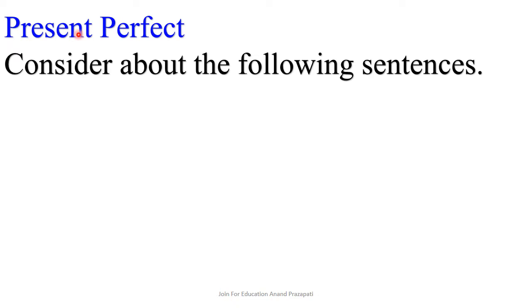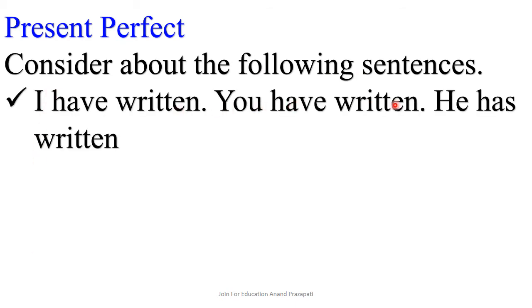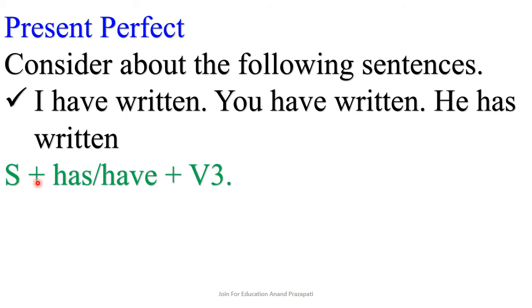Present perfect is the third kind of present tense. Consider the following sentences: 'I have written, you have written, he has written.' The structure of the present perfect is Subject + has/have + V3. Third person singular number needs 'has'; all others need 'have.' In 'I have written,' 'written' is the third form of 'write'.